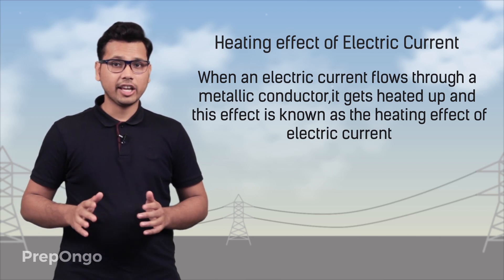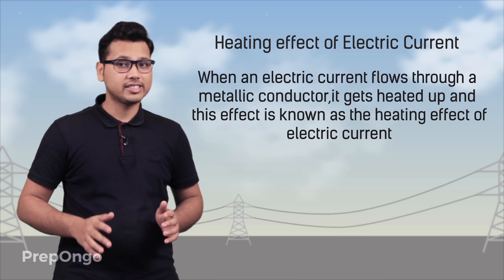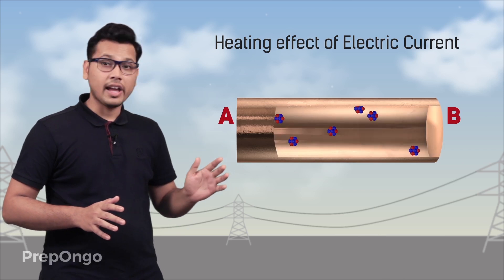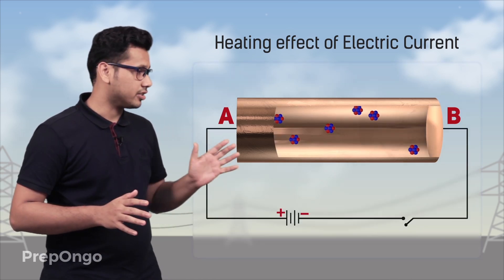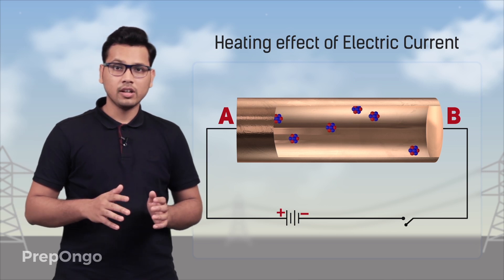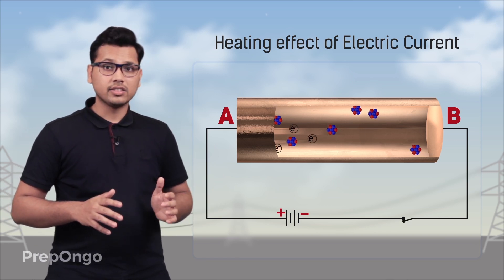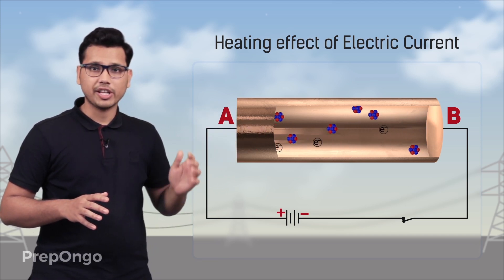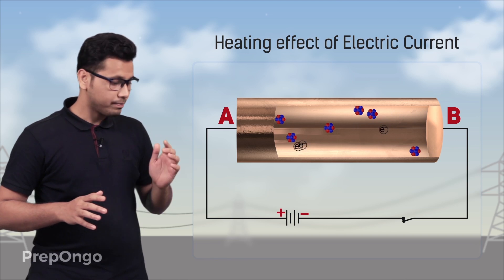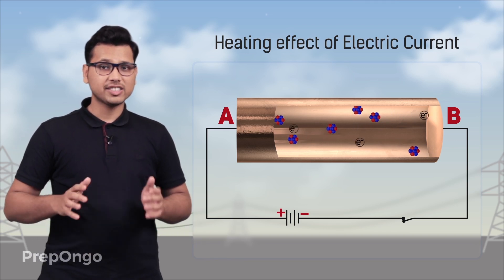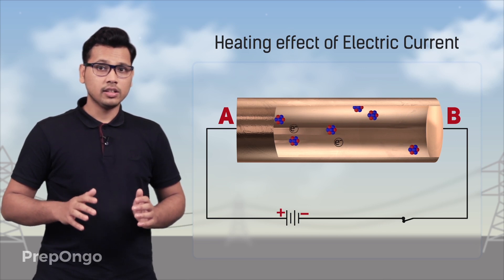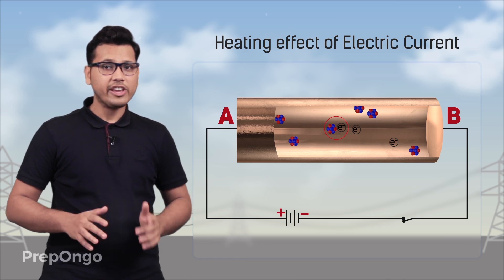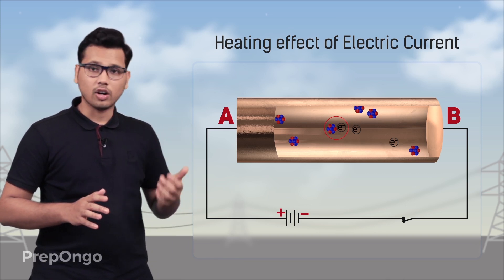Now why is this heating effect happening? What is the reason behind it? To find out, let's take a metallic conductor and apply some potential difference across it. As we switch on the battery, the electrons present in the conductor start moving towards the higher potential, or we can say towards the positive terminal of the battery. Now during this movement through the conductor, the electrons collide with the atoms present in the lattice, or we can say that they have to overcome the resistance of the conductor.